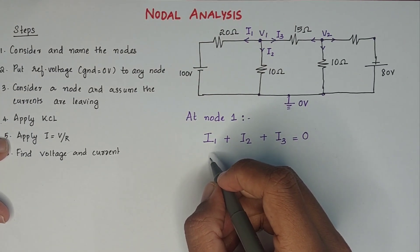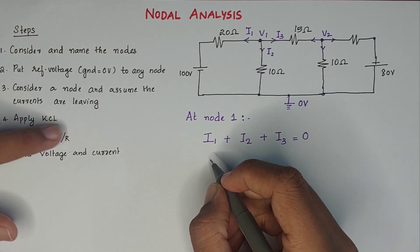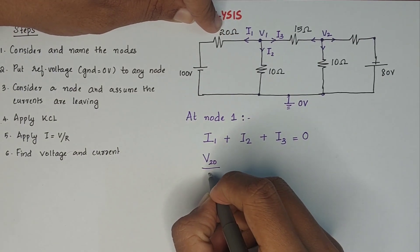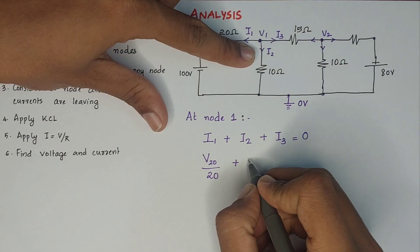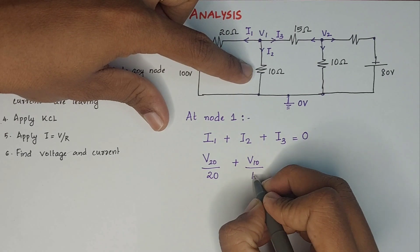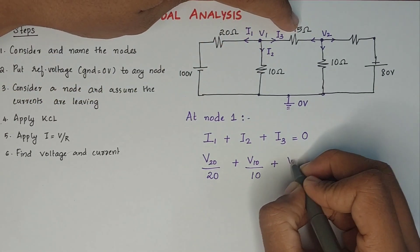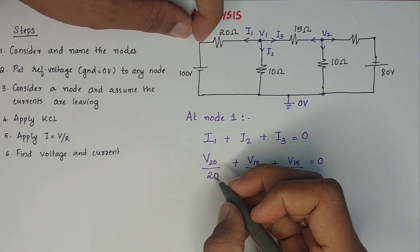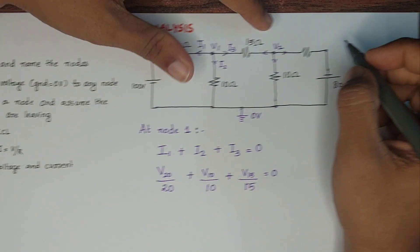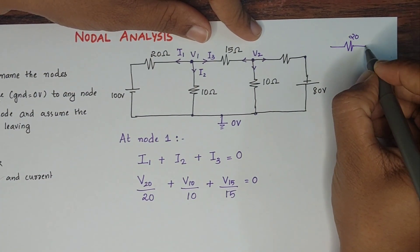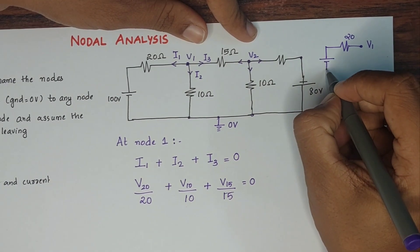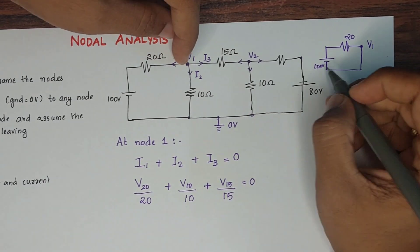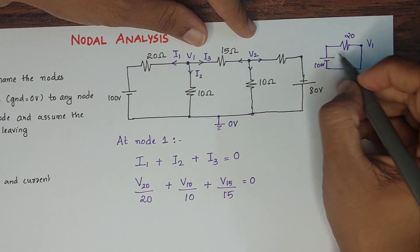For the fifth step, i is equal to V by R — that is Ohm's law. What is i1? The voltage across the 20-ohm resistor is V1 minus 100, divided by 20. i2 is the voltage divided by 10 ohms, and i3 is the voltage divided by 15 ohms. What is the voltage across this 20-ohm resistor? Here there is V1, and here there is 100 volts.